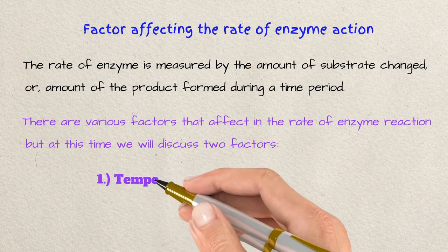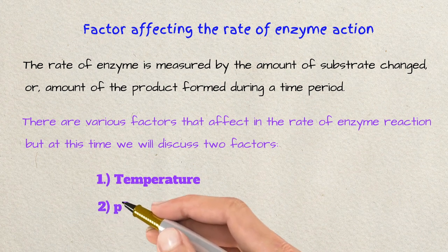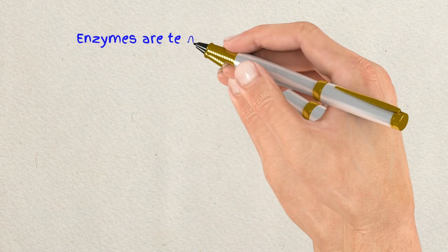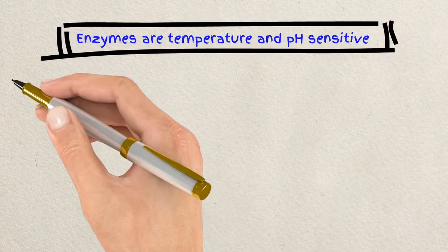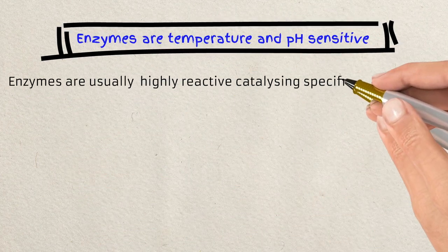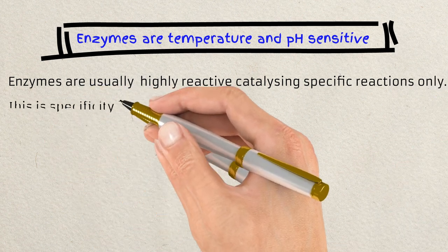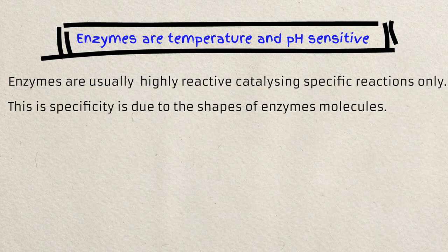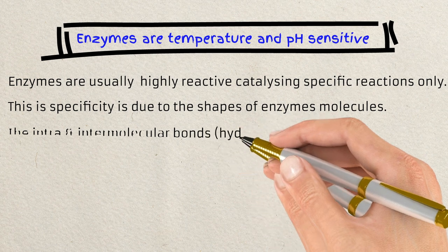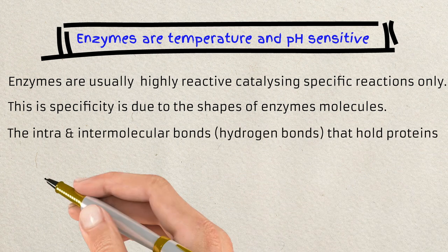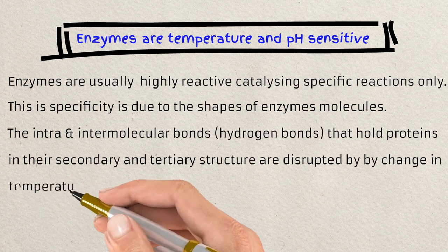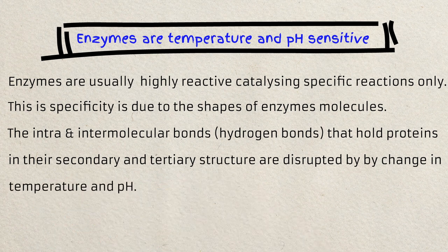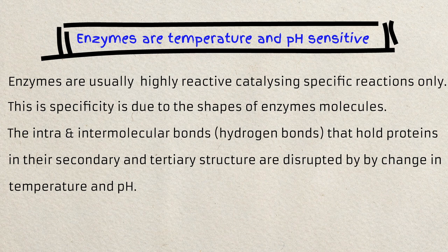Effect of temperature and pH, that is today's topic. Enzymes are temperature and pH sensitive. Enzymes are usually highly selective, catalyzing specific reactions only. This specificity is due to the shapes of enzyme molecules. The intra and intermolecular bonds, hydrogen bonds that hold protein in their secondary and tertiary structure, are disrupted by change in temperature and pH.